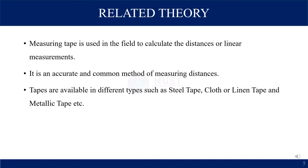A measuring tape is used in the field to calculate distance or linear measurements. It is an accurate and common method of measuring distances. Locally available tapes come in different types: steel tape, cloth or linen tape, and metallic tape.